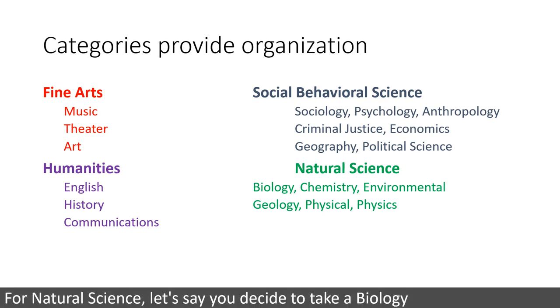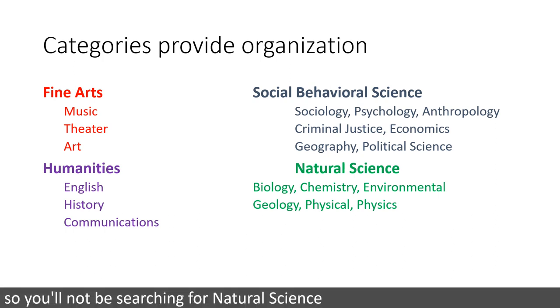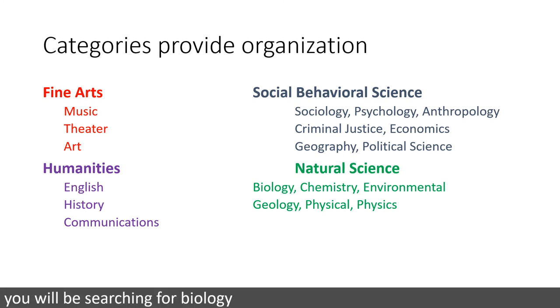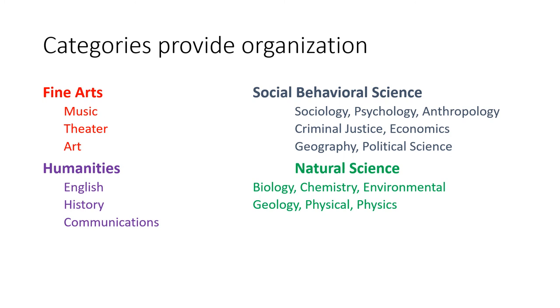For Natural Science, let's say you decide that you want to take a Biology. So you will not be searching Natural Science — you will be searching for Biology, such as Biology 2022.